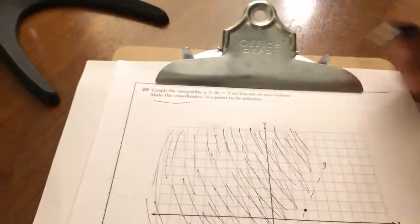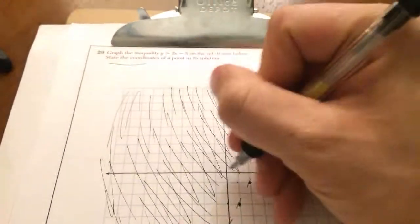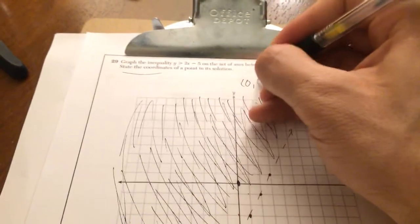They want you to state the coordinates of a point not in the solution. A very easy one, 0, 0.